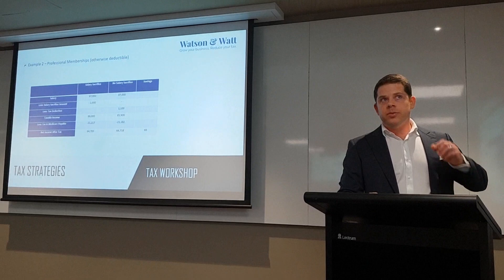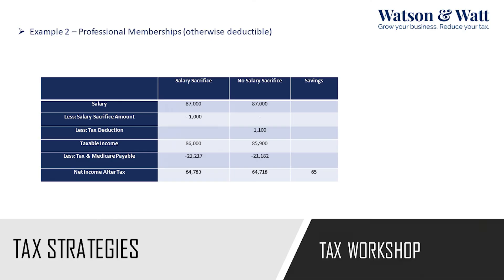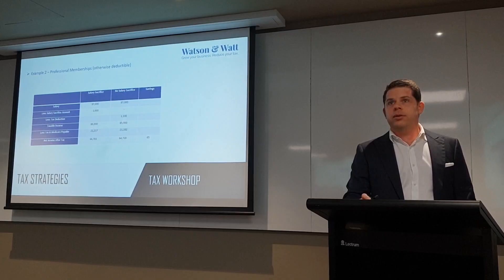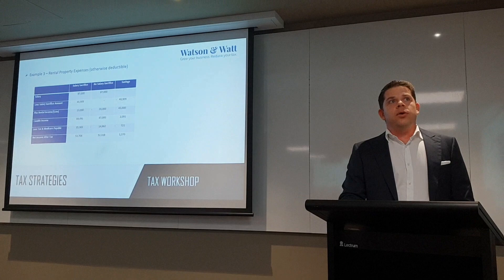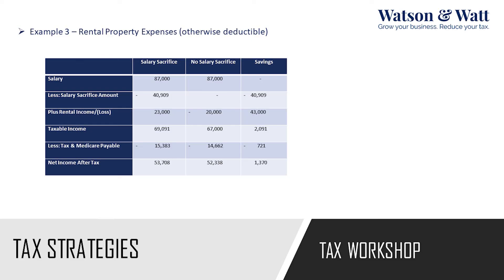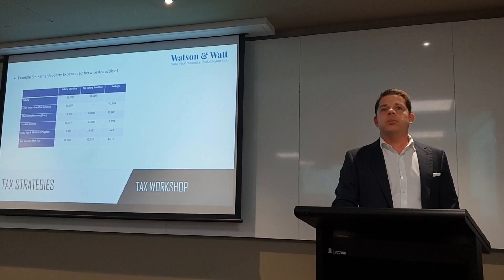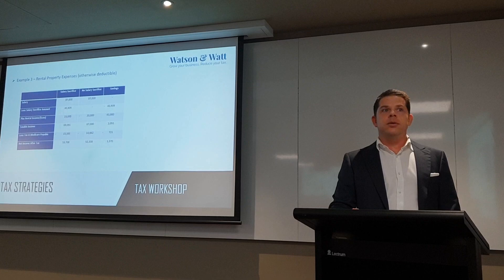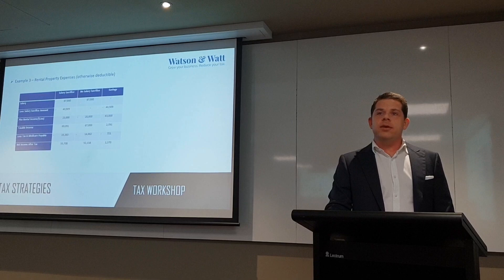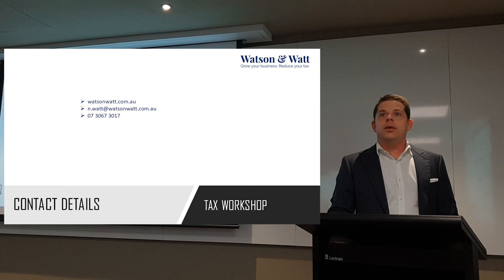The second one is professional memberships under the otherwise deductible rule. Anything that would normally be deductible, you can salary sacrifice without fringe benefits tax. This one doesn't have a huge benefit - you're basically just saving some GST - but if you have a lot of these expenses it could add up. If you have a rental property, this is also an otherwise deductible fringe benefit. You can save around $1,300 by salary sacrificing your rental property expenses. The theme here is there are ways to save some tax. None of them will take your tax to zero, but they all add up. If you did those two strategies on an $87,000 income, you'd save about $3,500 in tax. It does need some planning and needs to be done in advance - it can't be done in arrears. So that's it for Tax in 10 - I hope you enjoyed it.